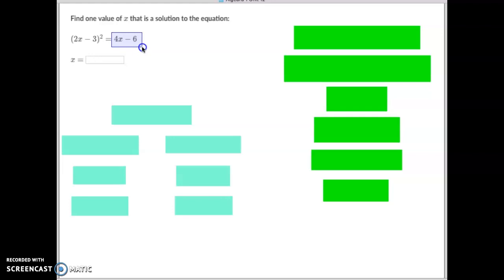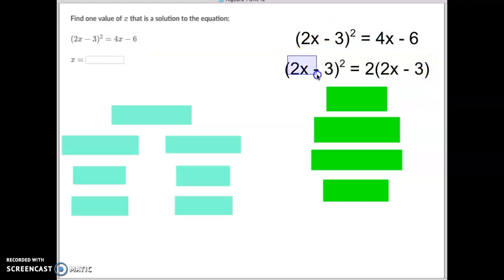You should if you realize you could pull a 2 out of both of those, and then 2x minus 3 would be left over. So if we take this equation right here, and we take this and factor out a 2 out of both of them, you'll notice that we have a (2x - 3) quantity squared on the left side, and we have 2 times (2x - 3) on the right side.